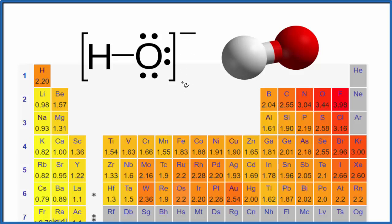So first, let's look at the difference in electronegativity between the hydrogen and the oxygen. The periodic table here has the values written in for us. Hydrogen: 2.20. Oxygen: 3.44.